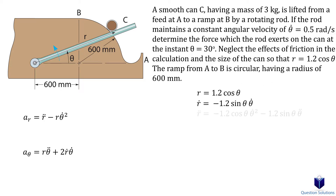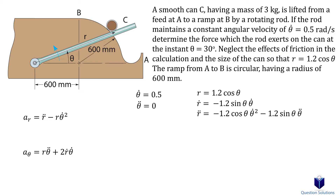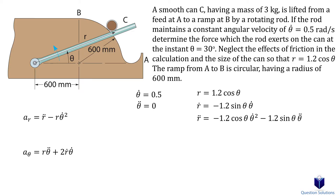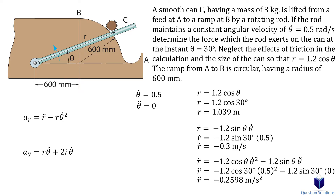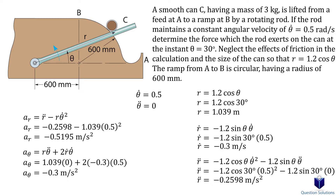The question says the angular velocity of 0.5 rad/s is constant, which means the angular acceleration — one derivative of angular velocity — is zero. We need to find the force when theta equals 30 degrees, so let's plug in 30 degrees along with the angular velocity and acceleration into our radial coordinate equations. Now that we have those values, we can find the radial and transverse accelerations.